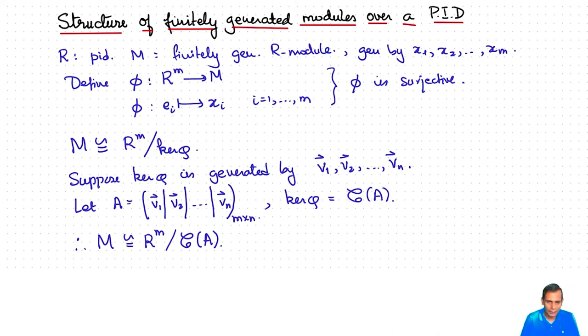Now we know that R^m mod column space of A is isomorphic to R^m mod column space of B if and only if A is similar to B. So let's use that. We also know that A is similar to a matrix in Smith normal form.